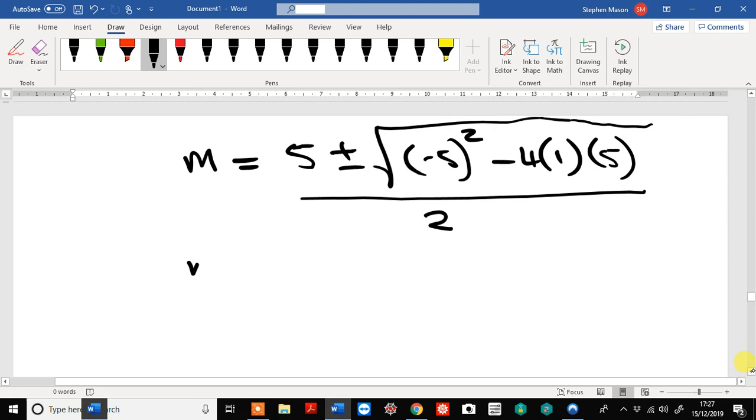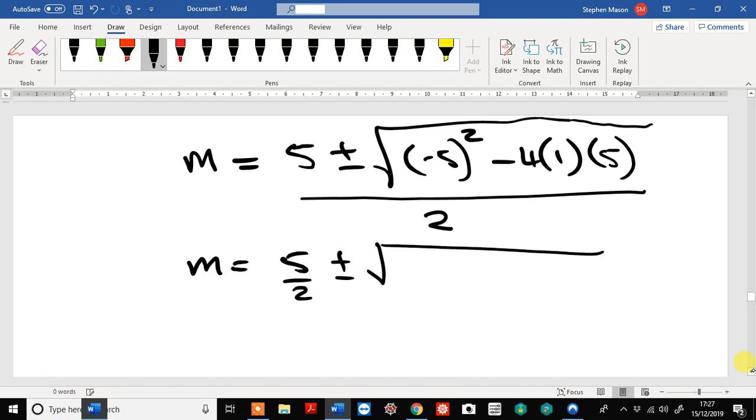And if we simplify that, we find that m is equal to 5 over 2 plus or minus 25 minus 20 all divided by 2. And that simplifies to m equals 5 over 2 plus or minus the square root of 5 over 2.